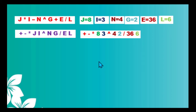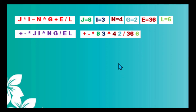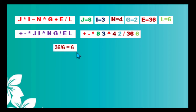In evaluating this prefix expression, we scan it from right to left and look for the first operator. So we start scanning from 6, then 36, then division operator — this is our first operator. Having found the first operator, we look for the immediate two operands to the right of it, which are 36 and 6, and perform division: 36 divided by 6 equals 6.